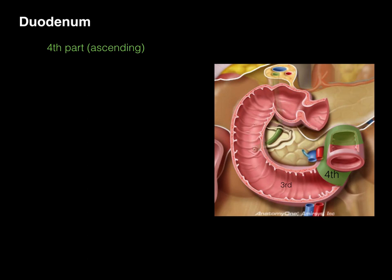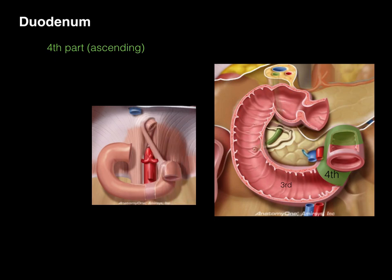The fourth, or ascending part, goes up and then gives rise to the jejunum — the next part of the small intestine. It also has an attachment called the ligament of Treitz, which comes from the right crus of the diaphragm and attaches at that fourth part of the duodenum where it becomes the jejunum. It's a distinguishing feature surgeons look for to determine where the duodenum ends and the jejunum begins, also called the duodenojejunal suspensory ligament.